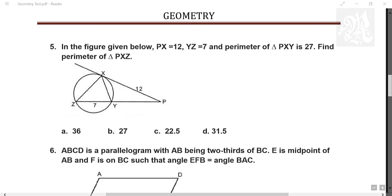In the figure below, PX is 12, YZ is 7. Perimeter of PXY is 27. Find the perimeter of PXZ. Alright. First of all by tangent secant theorem, you have PX square is PY into PZ.